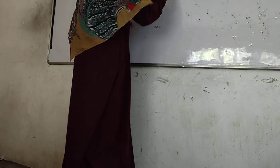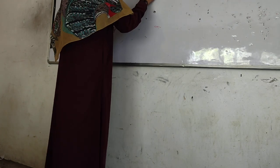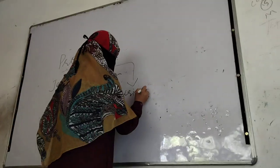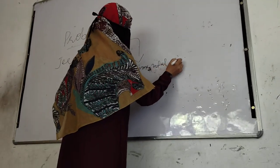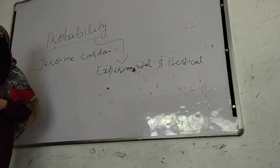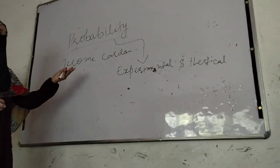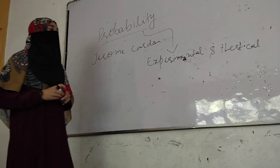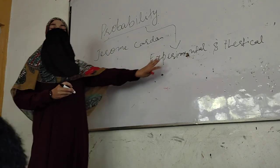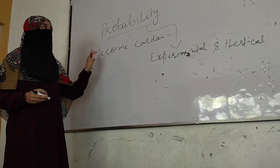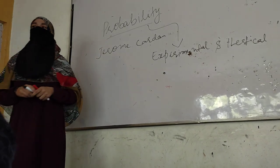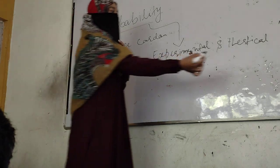Probability is divided into two sub-topics: experimental probability and theoretical probability. These are the two sub-topics of probability. We should know what experimental and theoretical probability are. Both are based on their terms of happening and outcomes, but the main difference between experimental and theoretical probability is this: theoretical probability attempts to predict what will happen.